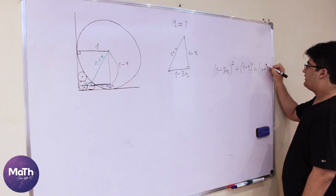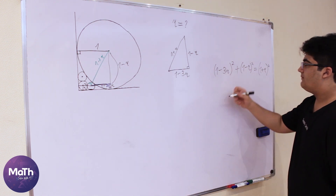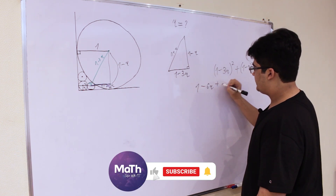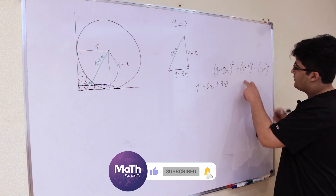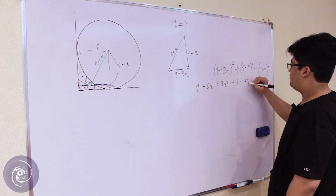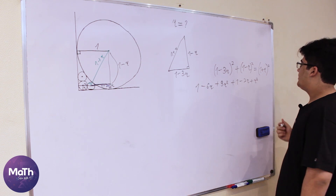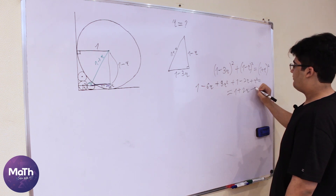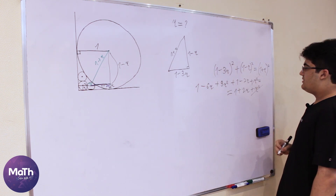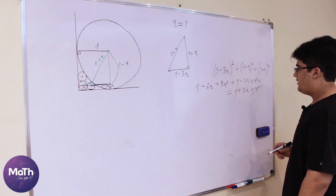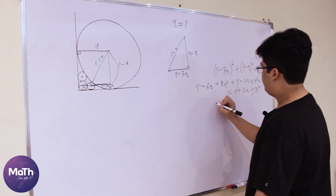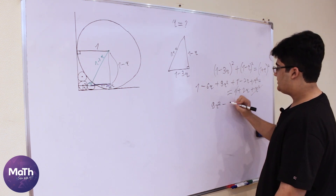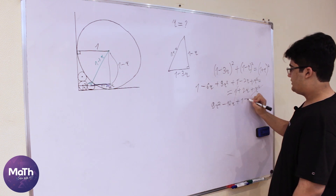Expanding: (1 minus 3r) squared gives 1 minus 6r plus 9r squared. Then (1 minus r) squared gives 1 minus 2r plus r squared. And (1 plus r) squared gives 1 plus 2r plus r squared. Combining and simplifying everything, we get 9r squared minus 10r plus 1 equals 0.